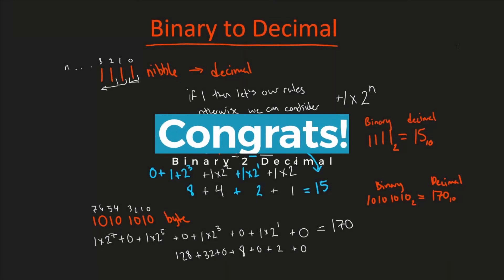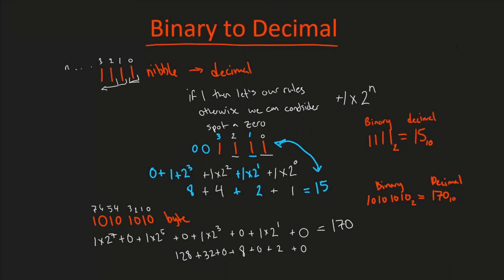Congratulations — you've successfully learned how to convert binary to decimal. And this doesn't just stop here. Let me give you a practice problem; if you want, post it in the comments section below when you have the answer. Let's do one, zero, zero, one, one, zero, zero, one — what is this in its decimal form? Let me know in the comments section below. If you have any questions, comments, or suggestions, please post them in the comments section. Make sure to subscribe for future videos and like the video. Catch me in a great community on Discord, and I'll catch you in another video. Thanks for watching.